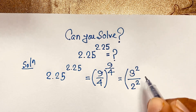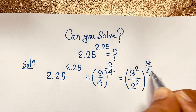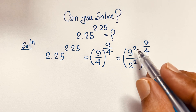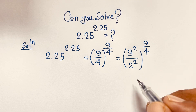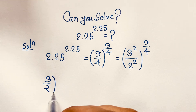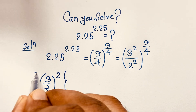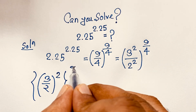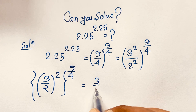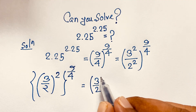So we have (3²/2²) to the power of 9/4. According to the exponential formula, since the exponent is the same, we can write this as (3/2)² to the power of 9/4. This expression becomes (3/2) to the power of 2 times 9/4.